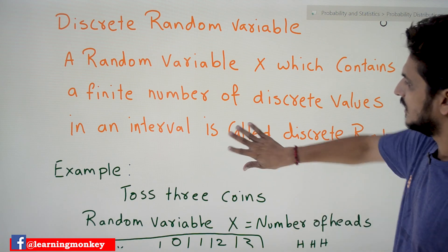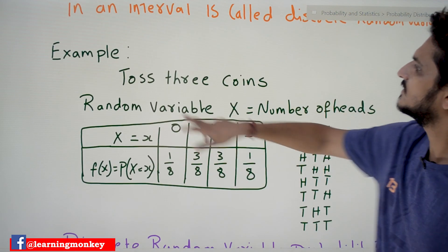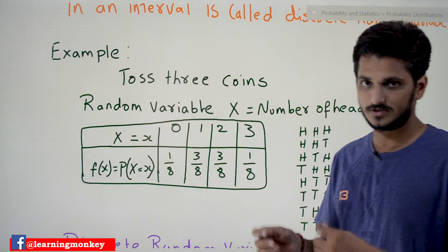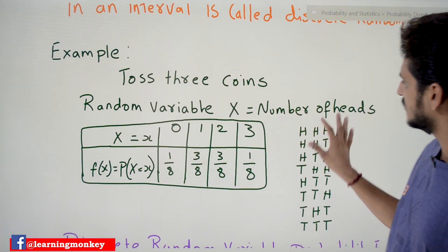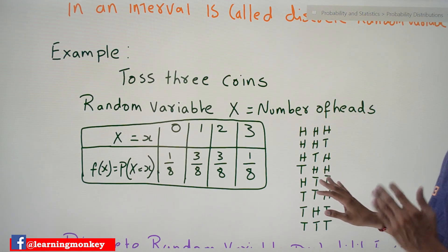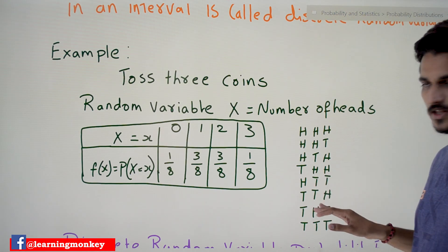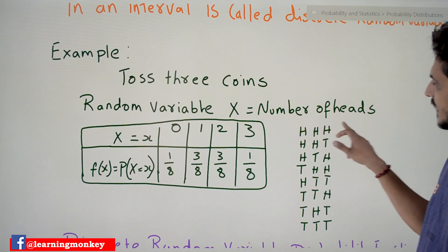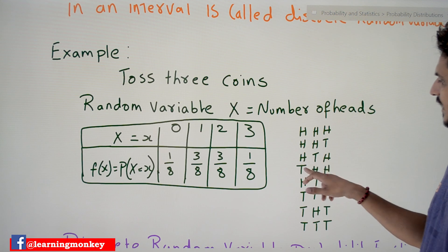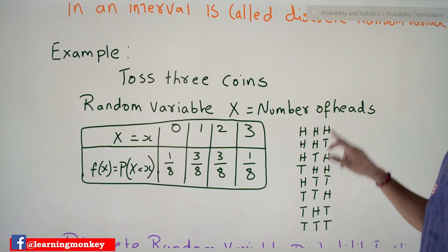The example we consider here is tossing three coins. What are all the possible sample space outcomes when we toss three coins? Head-head-head, head-head-tail, head-tail-head, tail-head-head — these are the eight possibilities.